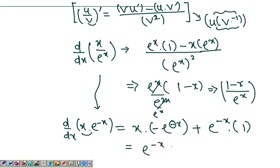So e to the negative x comes out, you're left with 1 minus x, which is 1 minus x over e to the x. So you get the same thing. This is an alternative to the quotient rule. You can simply apply the product rule by taking the power of the denominator to the negative one.